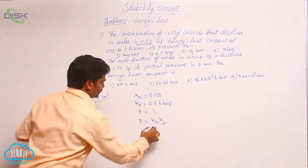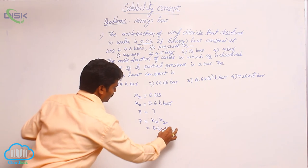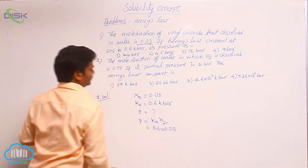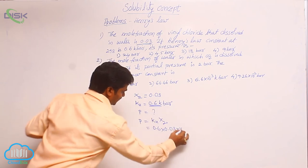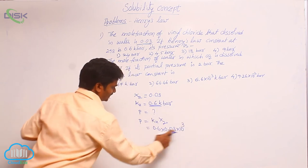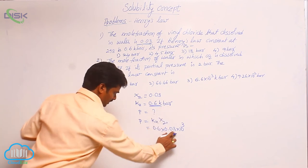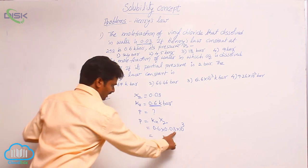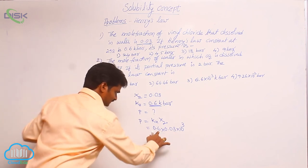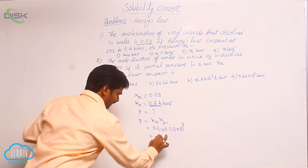That means KH value already given 0.6 into 0.03, but 0.6 kilo - kilo means 10 cube. So 0.6 into 10 cube kilo bar into 0.03. It will give the value 6 into 3, which is 18. So 18 here - total 18 bar.